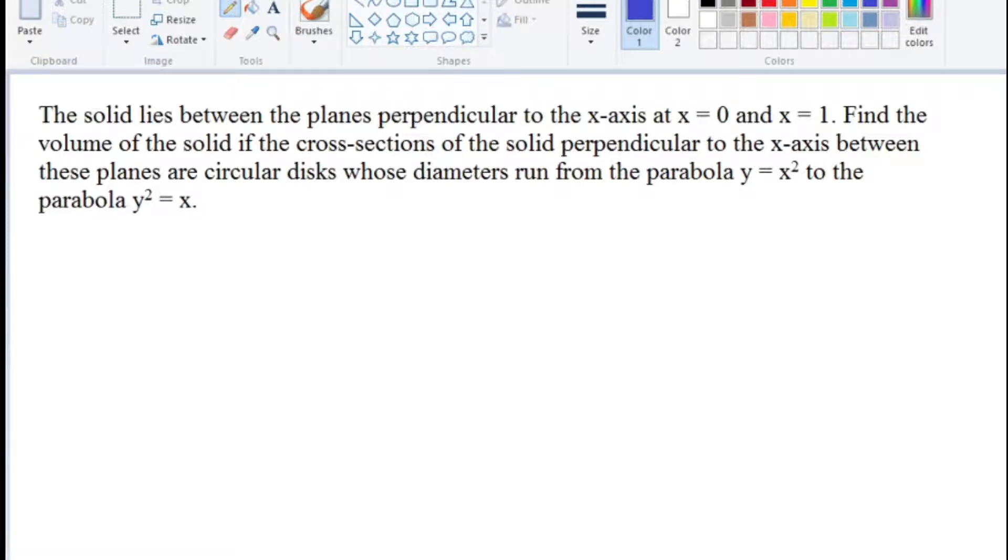The solid lies between the planes perpendicular to the x-axis at x equal to 0 and x equal to 1. Find the volume of the solid if the cross-sections of the solid perpendicular to the x-axis between these planes are circular disks whose diameter run from the parabola y equal to x square to the parabola y square equal to x.